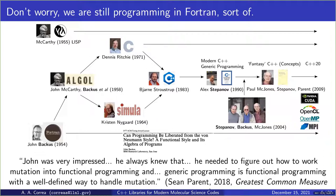At the same time, Backus, who probably worked at IBM all his life, was working on databases, and when he received his Turing Award in 1977, he complained about the style of programming that Fortran introduced — the imperative, von Neumann style. He wanted something more functional in style, but he also understood that efficiency was important. There are other functional-style languages but he wasn't satisfied with those either.